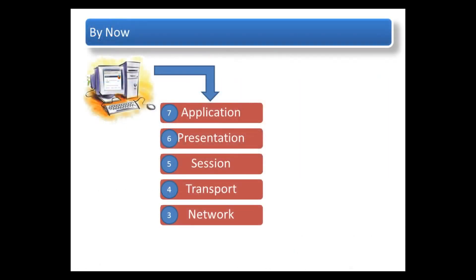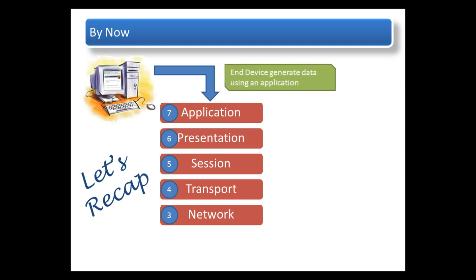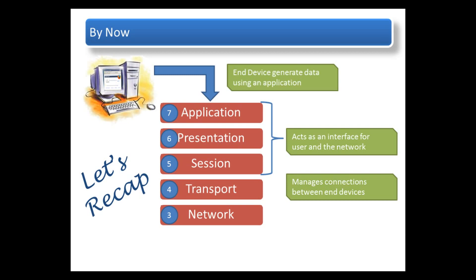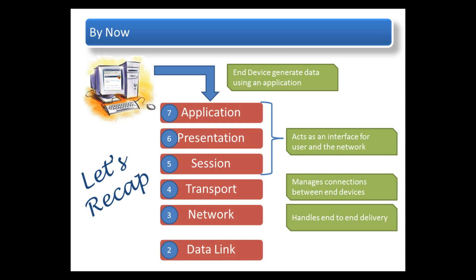Before we begin, let's take a step back and re-explore what we've discovered. The application layer acts as an interface between the user and their respective networks. The transport layer is responsible for dividing and managing communications between the services running on the two end systems. These segments are then carried by a network layer protocol like IP to their final destination. The data link layer provides a means for exchanging data over a common local media by bridging the gap between the logical and physical network.